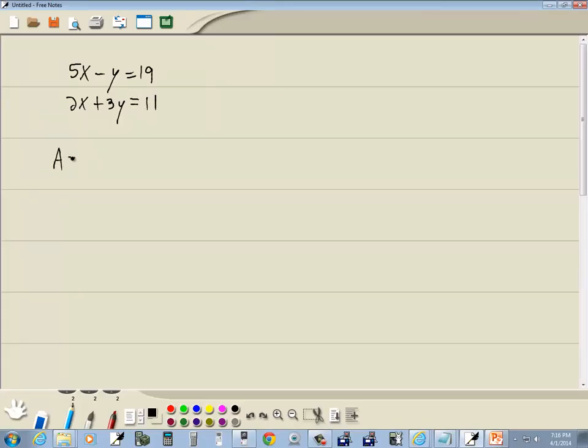To begin with, our A matrix is the numbers off the variables, the coefficient matrix. So we've got 5, negative 1, 2, 3.